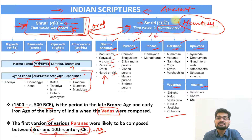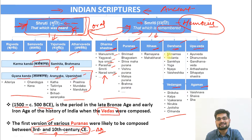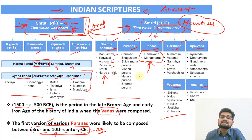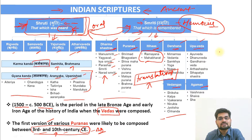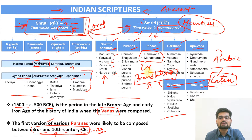Knowledge was preserved and transferred from one generation to another through the Gurukula system — from one person, one family, through genealogy. These are the literary sources we have in the forms of Vedas, Upanishads, Puranas, and Itihasas such as Ramayana and Mahabharata, which were later translated during the British colonial period — first into Arabic, then from Arabic into Latin, and eventually into English, making them a worldwide phenomenon because of colonialism.